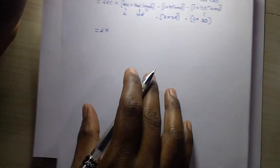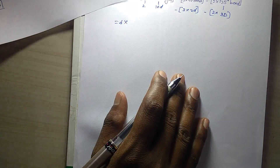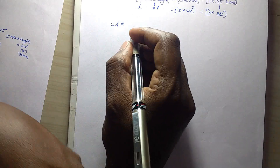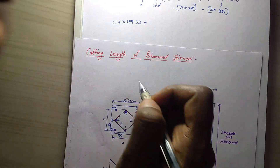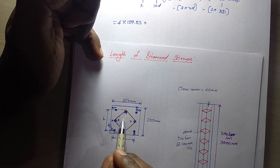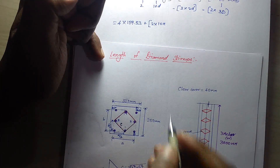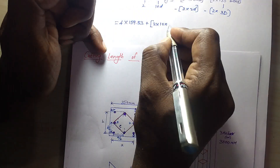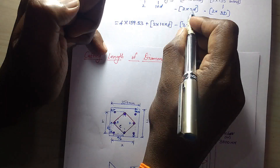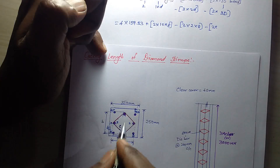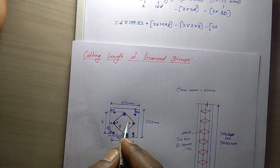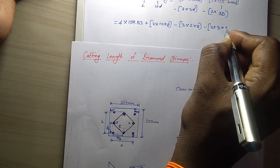C value already calculated: c value 159.53. Hooks render total render hook — 2 numbers hook, 10D. So 10 into dia, dia of the bar 8mm. So 8 minus 3 into 90 degree bend 2 times of dia. Hook — 135 degree bend, so that's 3 times of dia, dia 8mm.